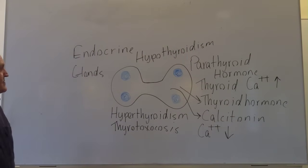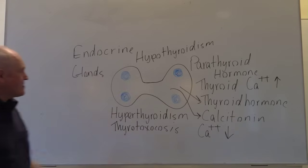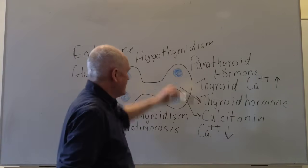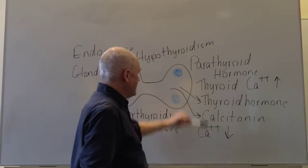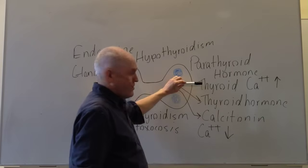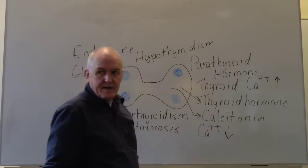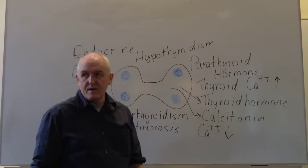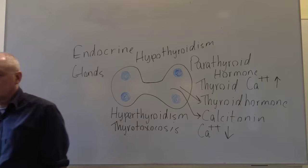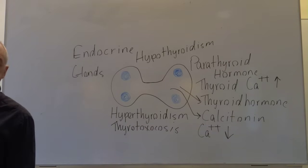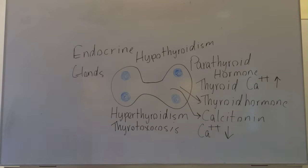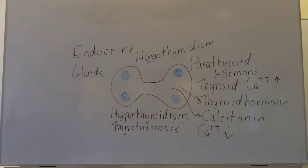To summarise the thyroid gland: parathyroid hormone raises calcium, calcitonin lowers calcium, and thyroid hormone regulates the metabolic activity of the body.